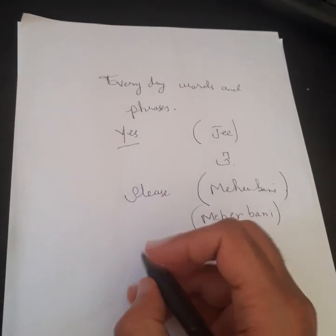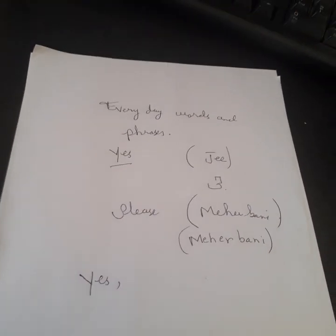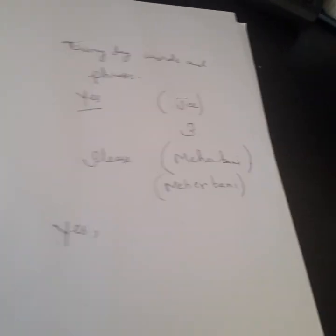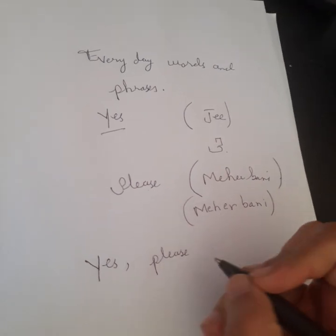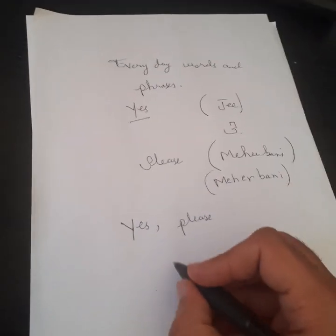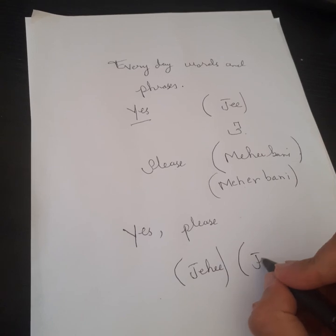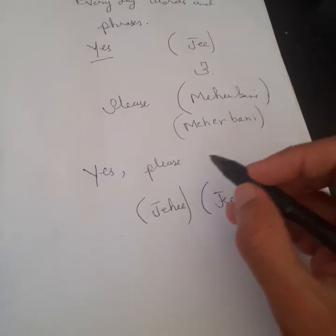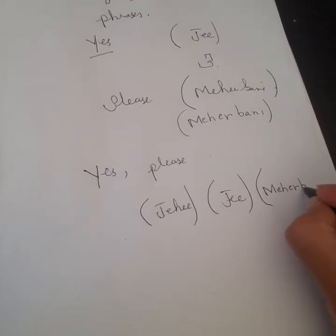Let's try to use them together. So if I say 'yes please', it depends on the sort of sentence you are using and the content and the deep meaning inside that sentence. So when I say yes and then please, we will say 'Ji'. Some people will say 'Jee', J-E-E, and then please is 'Meherbani', M-E-H-E-R, B-A-N-I.